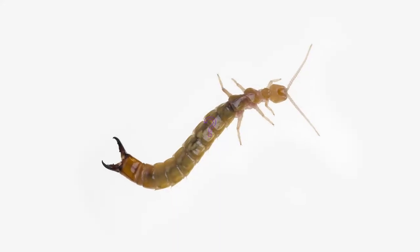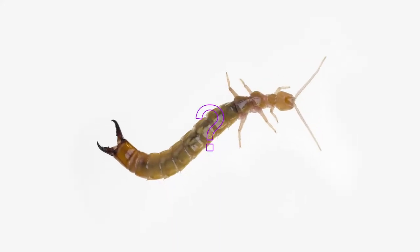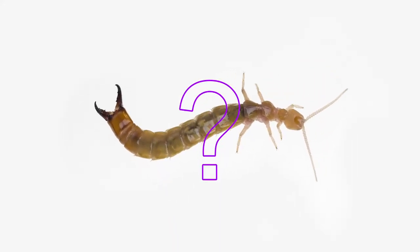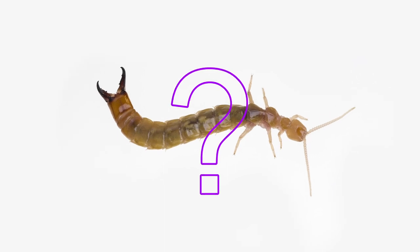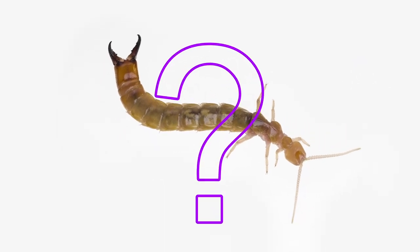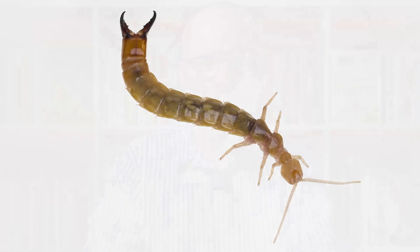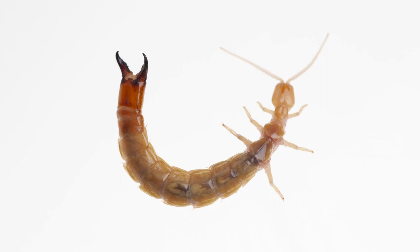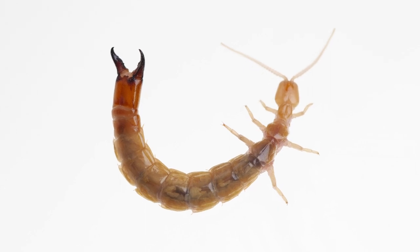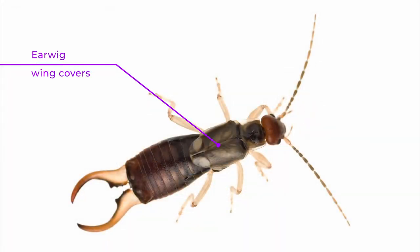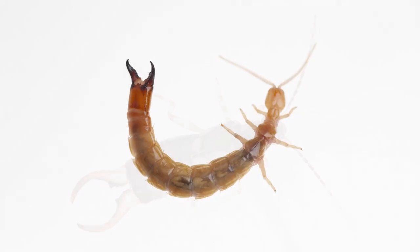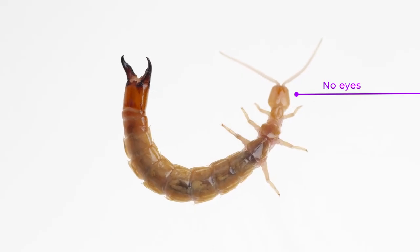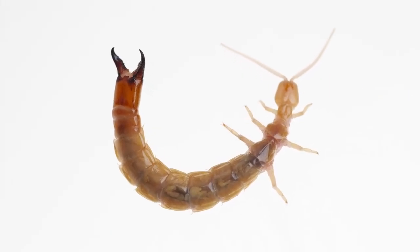If you saw this creature in your garden, you would assume it's an insect. It's got six legs, so it must be an insect, right? But it looks like an earwig, so why is this animal not an insect? If you look closely, you can see it has no wings or wing covers like you see on an earwig. It also has no eyes — so what is it?